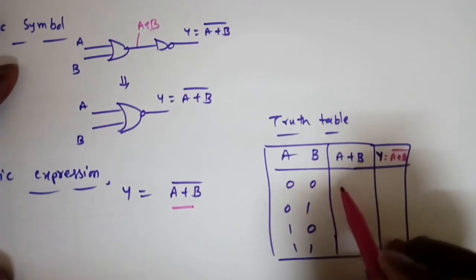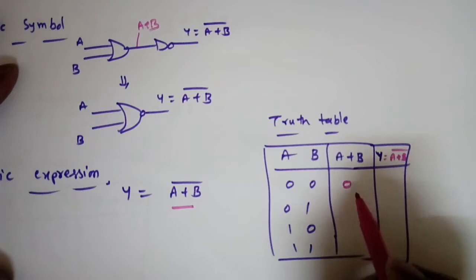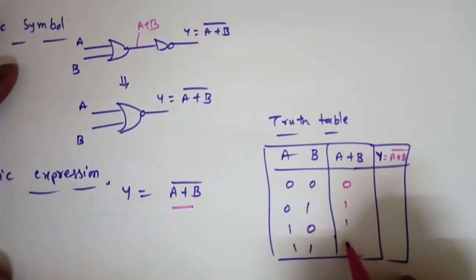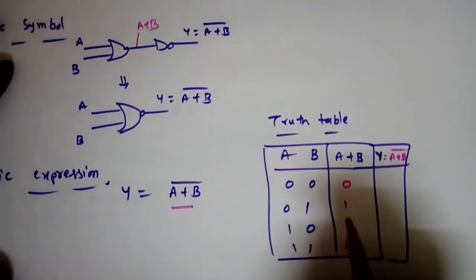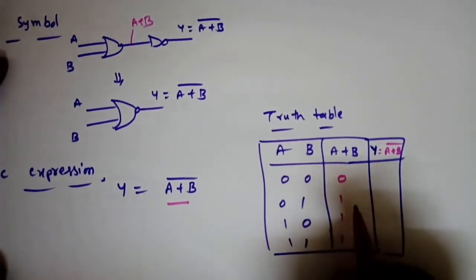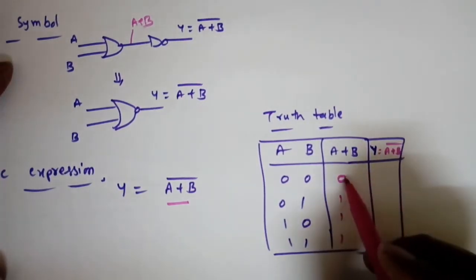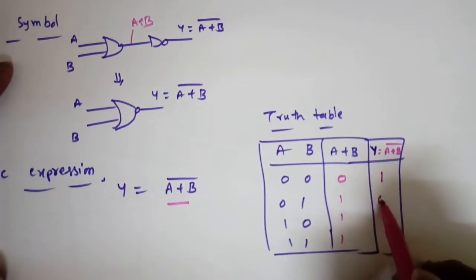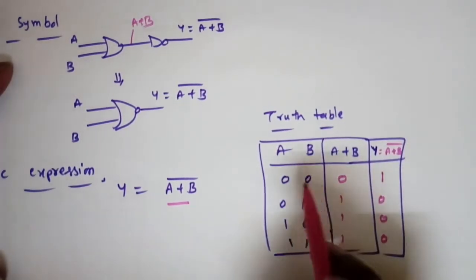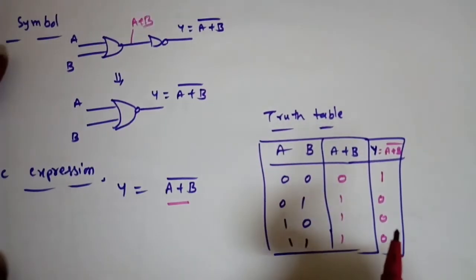For the NOR truth table, we first find the OR gate output: if both inputs are low, output is low; if any one input is high, the output is high. After inversion, we get the NOR output. So if both inputs are low, the output is high in the NOR gate.